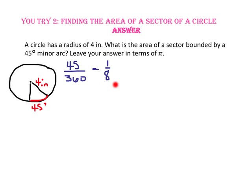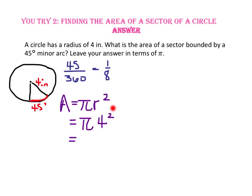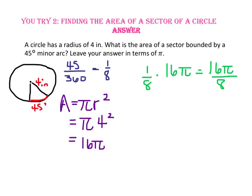We want to find one-eighth of the total area. The area of the circle is πr² = π times 4 squared = 16π square inches. Since the sector is one-eighth of the entire area, we take one-eighth times 16π. Since 16π divided by 8 is 2π, the area of the sector is 2π square inches.